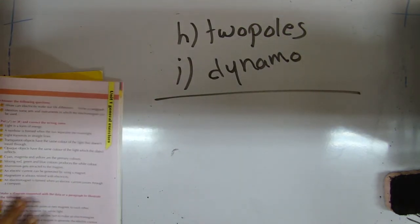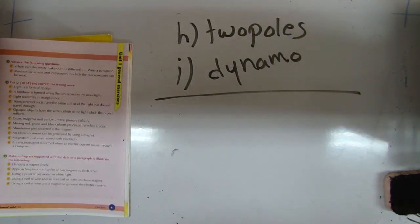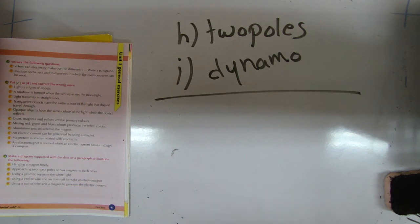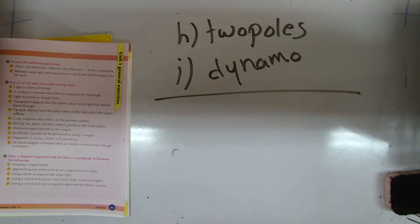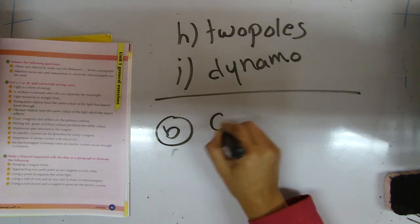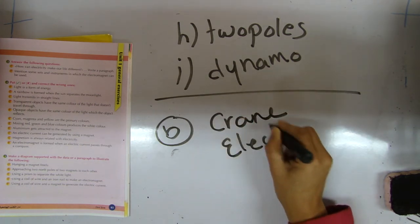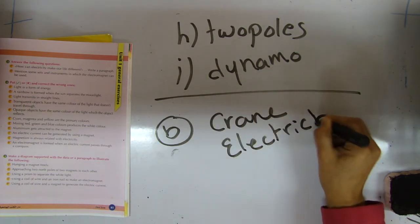Open page 41. Answer the following question: how can electricity make our life different? Write a paragraph. By using electricity, it lights our houses, it lights the streets and the factories, which helps us in our daily life. Mention some devices in which the electromagnet can be used. We can use electromagnets in making a crane, electric bell, and mixer.